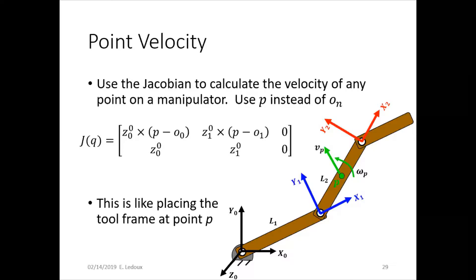If you want to calculate velocity of a specific point, you can also use the Jacobian for that. Normally you would use the Jacobian to calculate end effector velocities from the joint velocities, but instead you could write the forward kinematics equations to the point instead of to the tip of the robot.